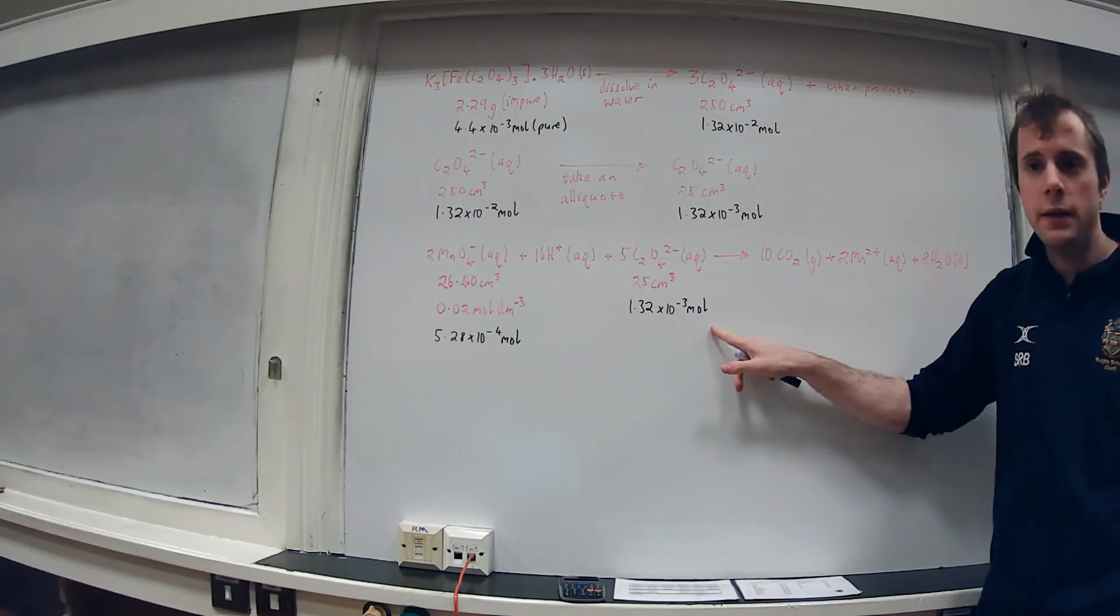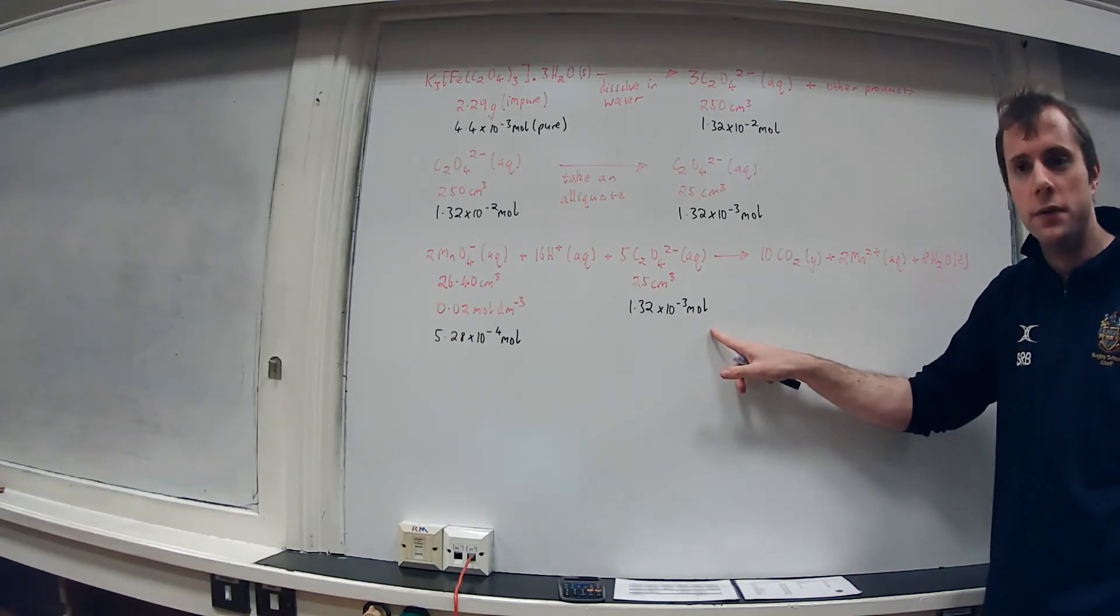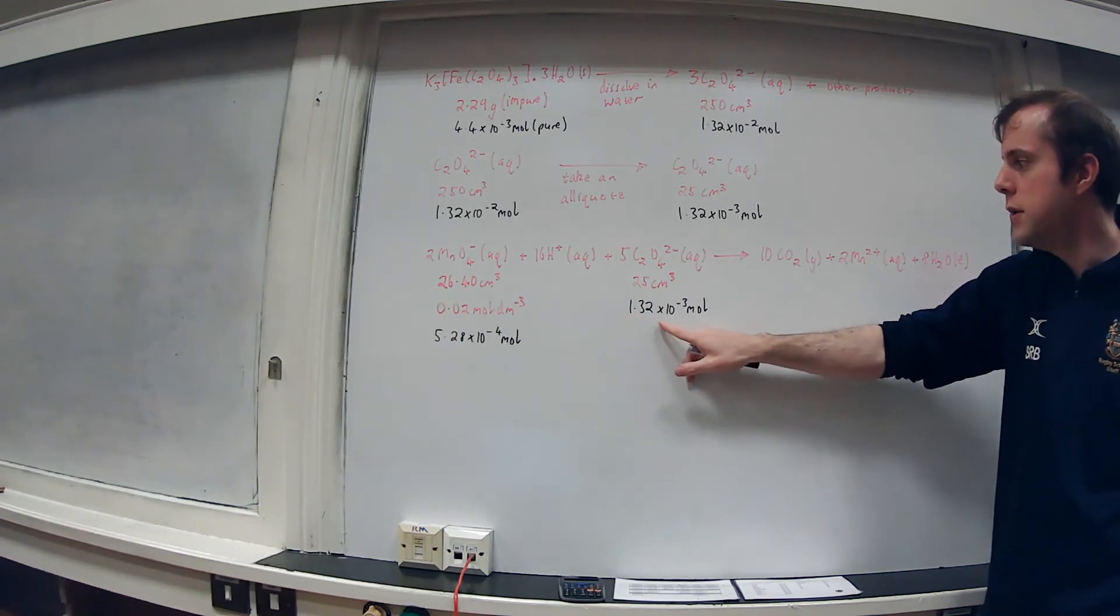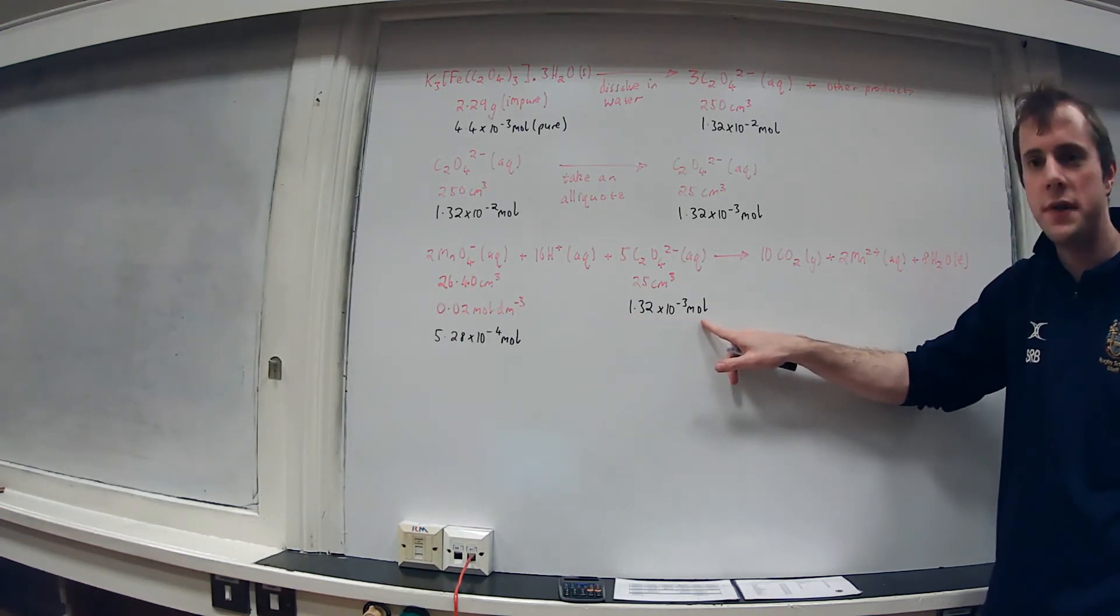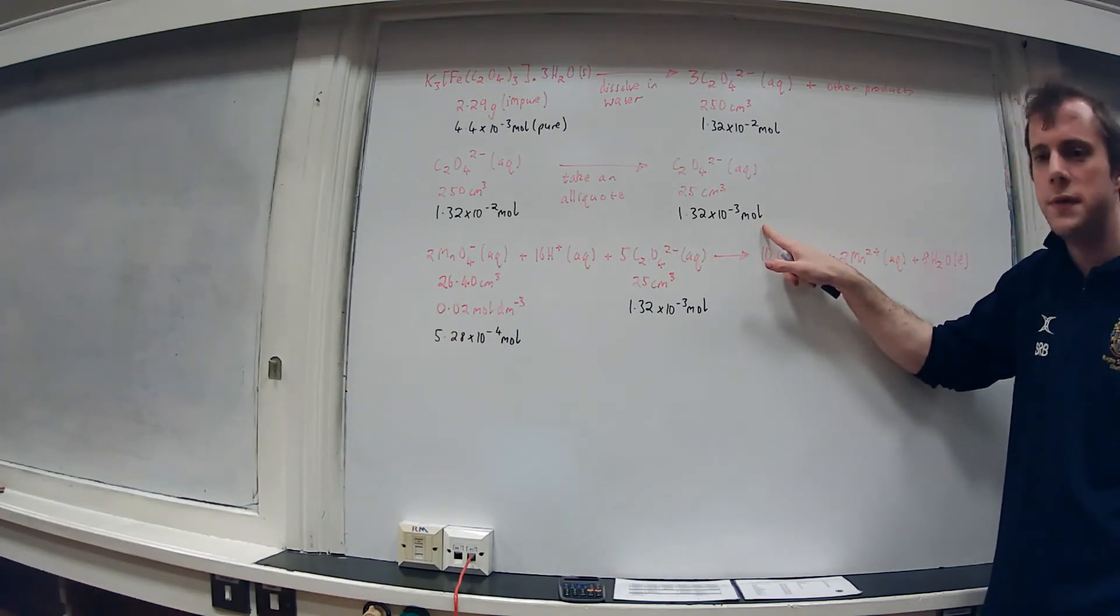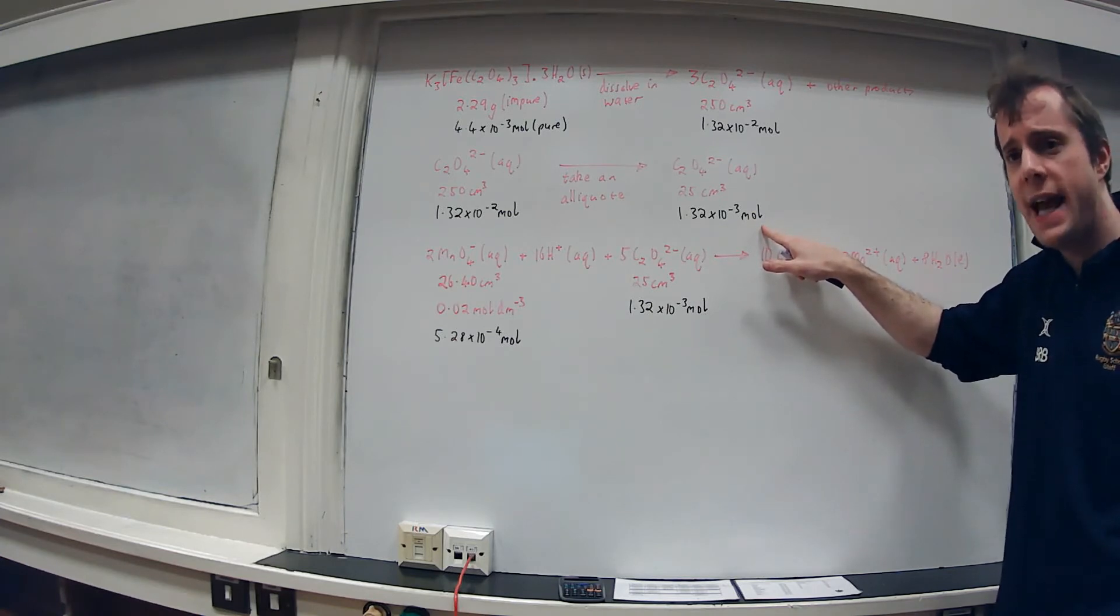The beauty of what we've done is it's now really easy to work back. It would be very difficult to do without these quasi equations. So if I have 1.32 times 10 to the -3 moles here, I have 1.32 times 10 to the -3 moles up here. It's the same sample.